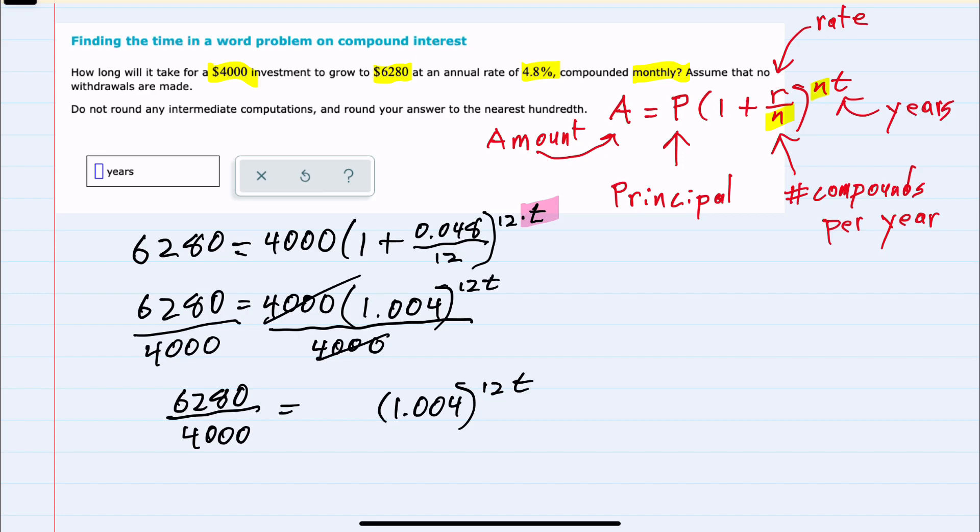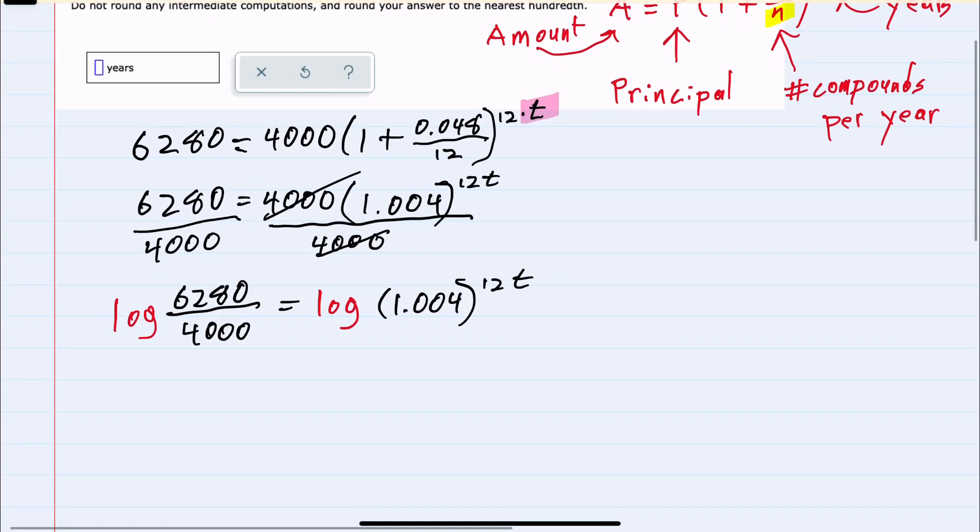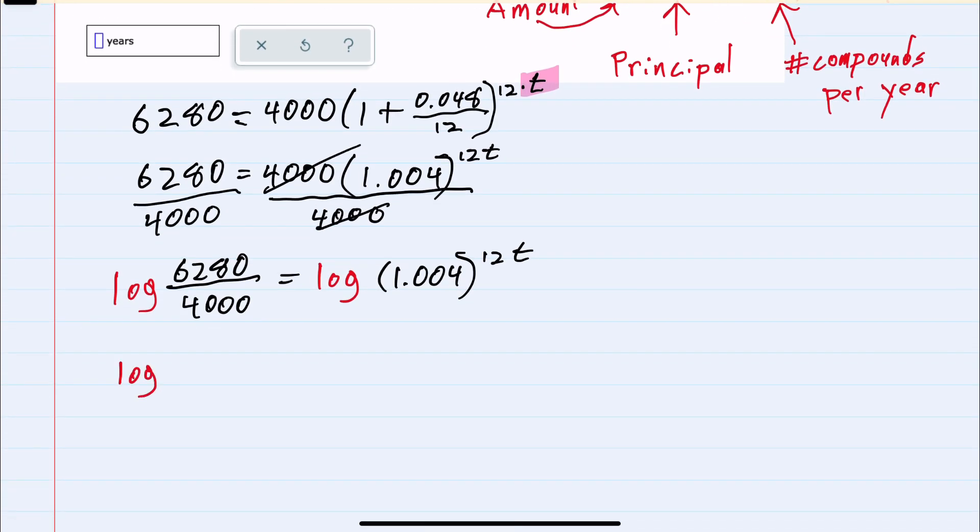And this is where we will need to introduce logarithms to get our variable out of the exponent. So I can take the log of both sides, and on the left-hand side, I'll just bring this down. But on the right-hand side, I can use the rules of logarithms to bring this exponent down as a coefficient in front of the logarithm.